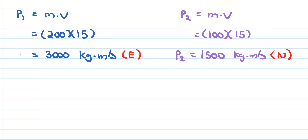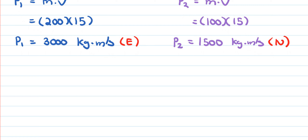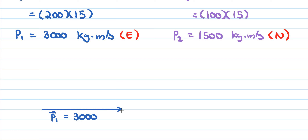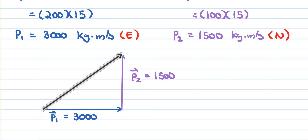Now that we have both momentum vectors, let's create a vector diagram. We have a vector going east labeled P1 with magnitude 3000, and a vector going north labeled P2 with magnitude 1500. The resulting combined momentum vector P3 is drawn from head to tail.